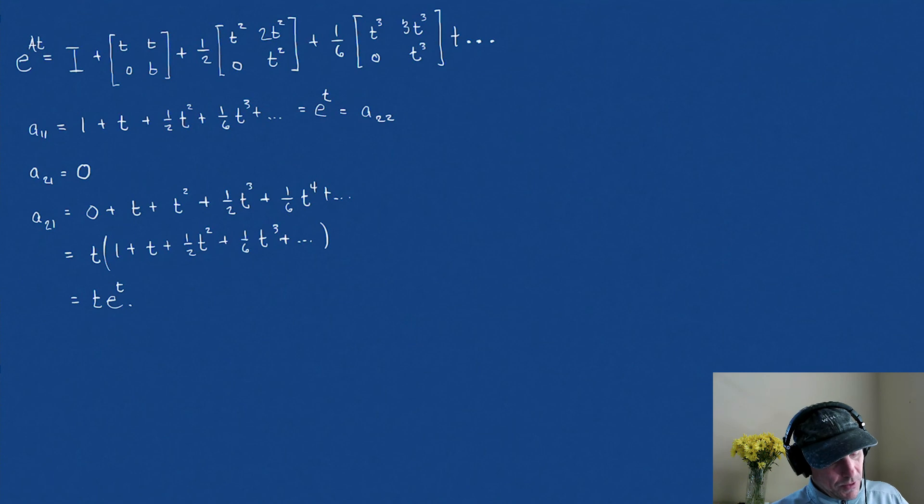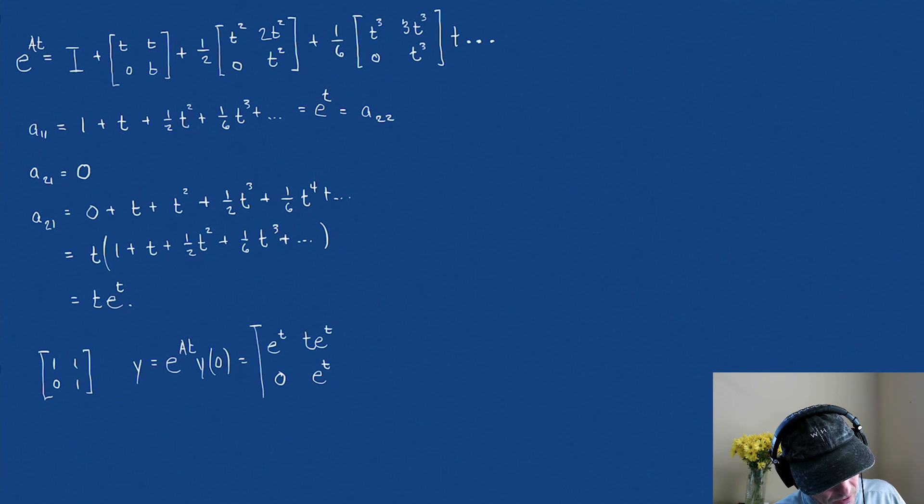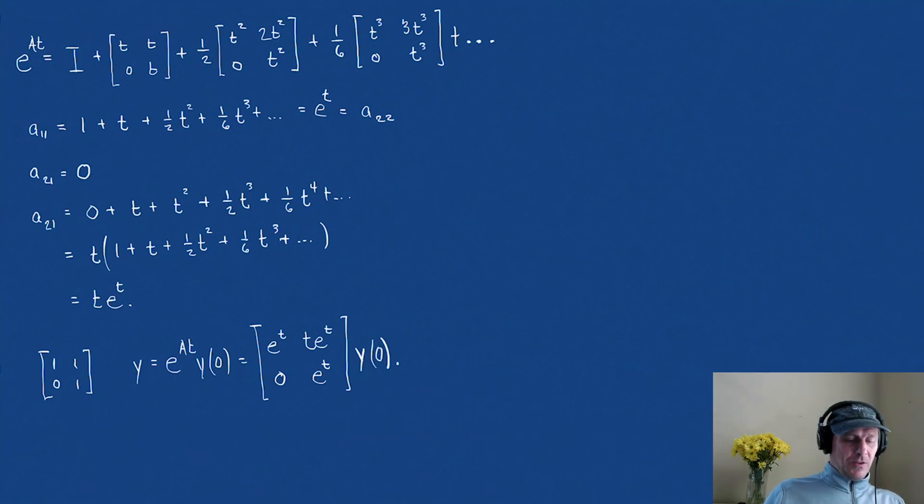Which it shouldn't be surprising if we recall that the matrix of A has repeated eigenvalues 1, 1. So we have a resonance issue here. And there we go. So now we can say that our solution is y = e^(At) times some initial condition. Our e^(At) is the matrix [[e^t, te^t],[0, e^t]] times whatever our initial conditions vector is, y(0). And that's how we can use this to solve this.